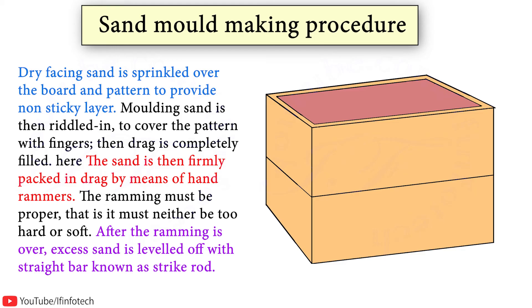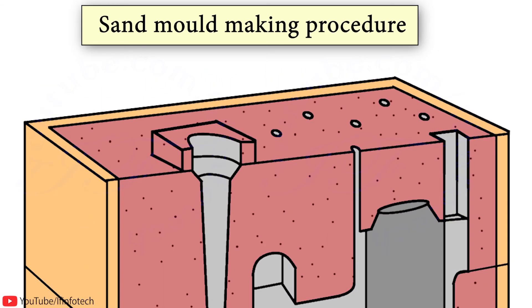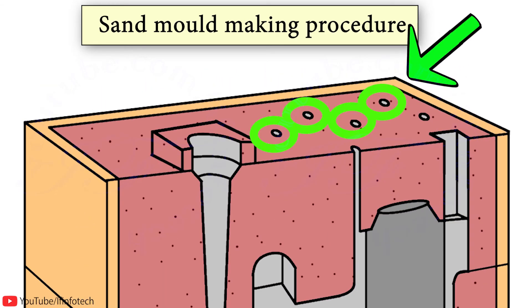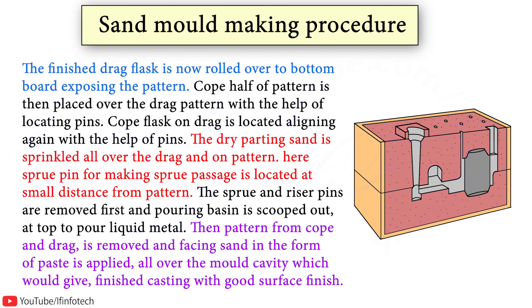The ramming must be proper. After the ramming is over, the excess sand is levelled off with a straight bar known as a strike rod. With the help of a vent rod, vent holes are made in the drag to the full depth of the flask. The finished drag flask is now rolled over to the bottom board, exposing the pattern. The cope half of the pattern is then placed over the drag pattern with the help of locating pins.